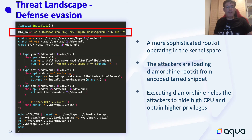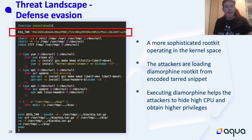Continuing with the same Team TNT campaign, they are trying to run diamorphine. In the code, you can see marked in red a piece of code that is encoded in Base64. When you decode it, it is a tar file — a compressed file. When you extract the file, you see the C code of diamorphine, which needs to be compiled. Basically they are using three or four defense evasion techniques in order to hide the diamorphine.